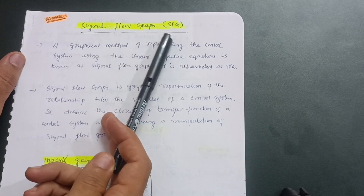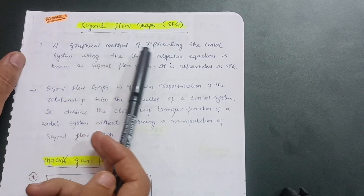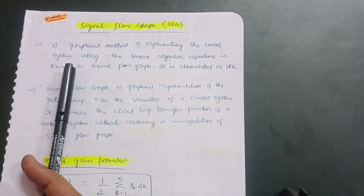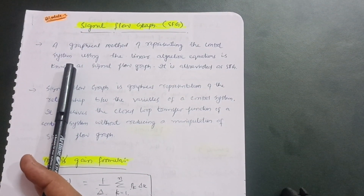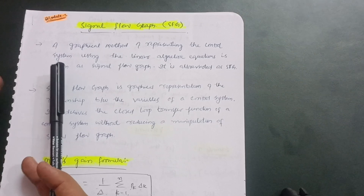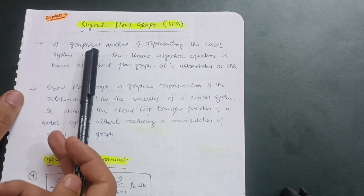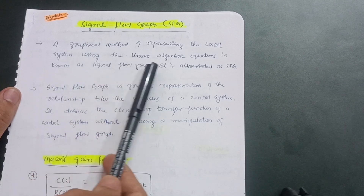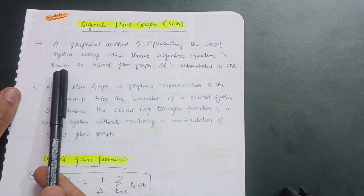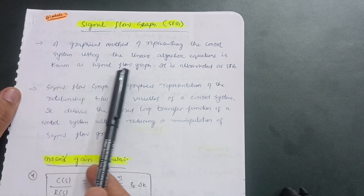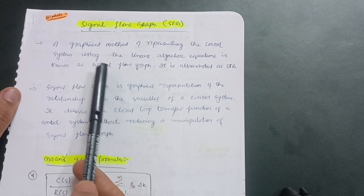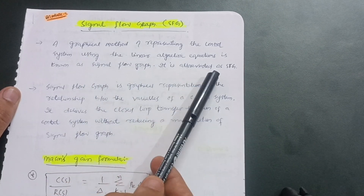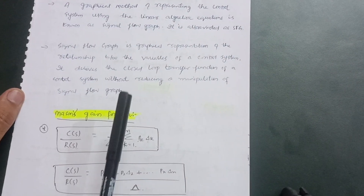Signal Flow Graph, abbreviated as SFG, is the graphical method of representing the control system. Just as block diagram reduction was a pictorial representation, SFG is a graphical method of representing the control system using linear algebraic equations. Simply remember: it is a graphical method of representation, abbreviated as SFG.